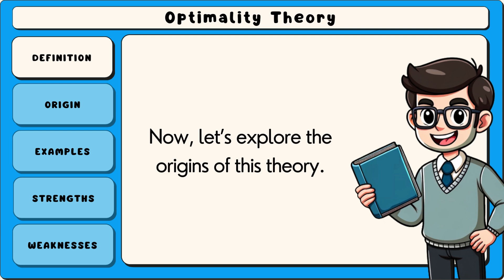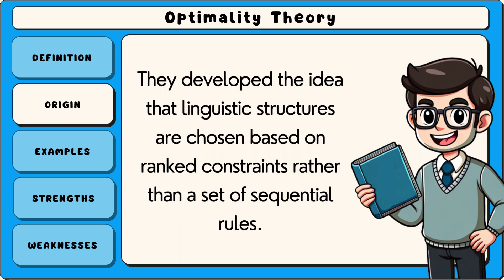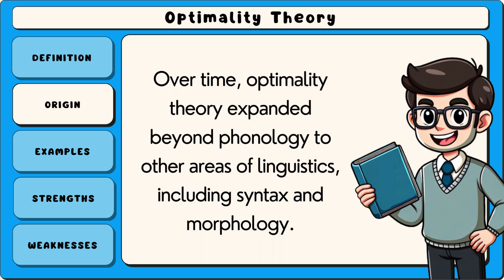Optimality theory was introduced by linguists Alan Prince and Paul Smolensky in 1993 as a new way to understand phonology, the study of sounds in language. They developed the idea that linguistic structures are chosen based on ranked constraints rather than a set of sequential rules. Their work was influenced by earlier theories in generative grammar but sought to explain why languages sometimes prefer less complex or more natural-sounding forms. Over time, optimality theory expanded beyond phonology to other areas of linguistics, including syntax and morphology.